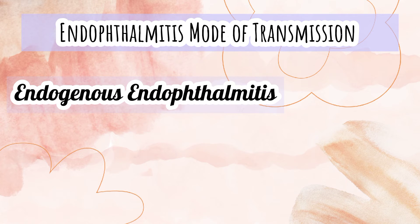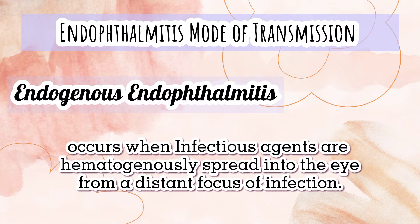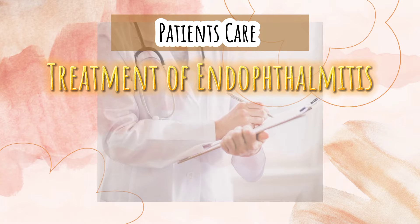Endogenous endophthalmitis occurs when infectious agents are hematogenously spread into the eye from a distant focus of infection. The treatment of endophthalmitis depends in part on the cause of the condition. It's important to get an antibiotic into the eye as soon as possible. Typically, antibiotics are placed right into the eye with a tiny needle.